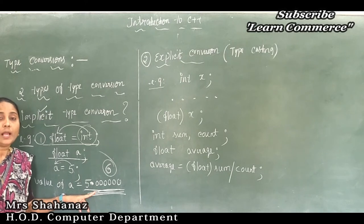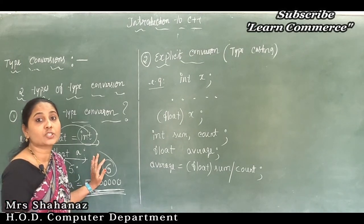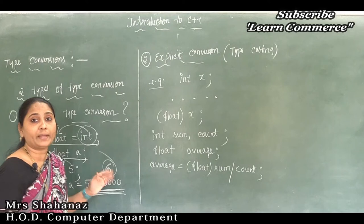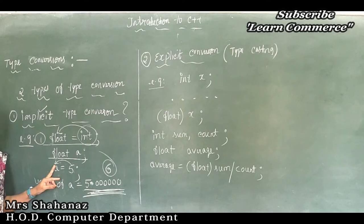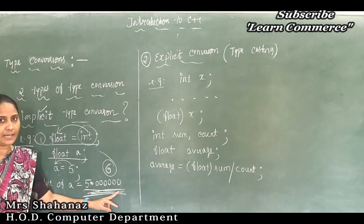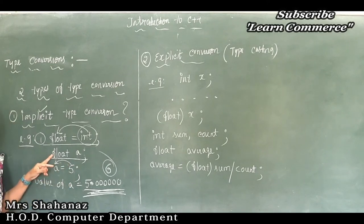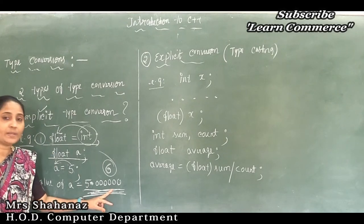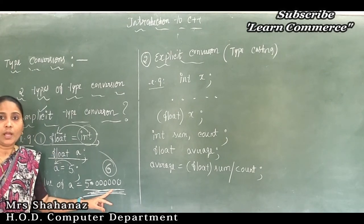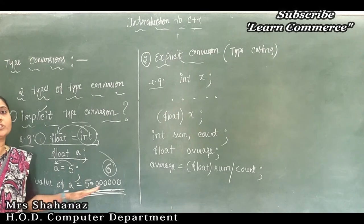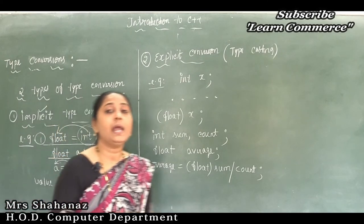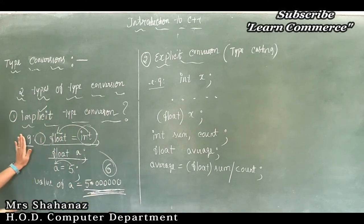This type of conversion is performed by the compiler software — by the machine. If you declare float, it provides six significant digits after the decimal point. If you declare double, it provides 10 digits after the decimal point. Depending on the data type, the compiler handles everything automatically. This is about implicit type conversion.